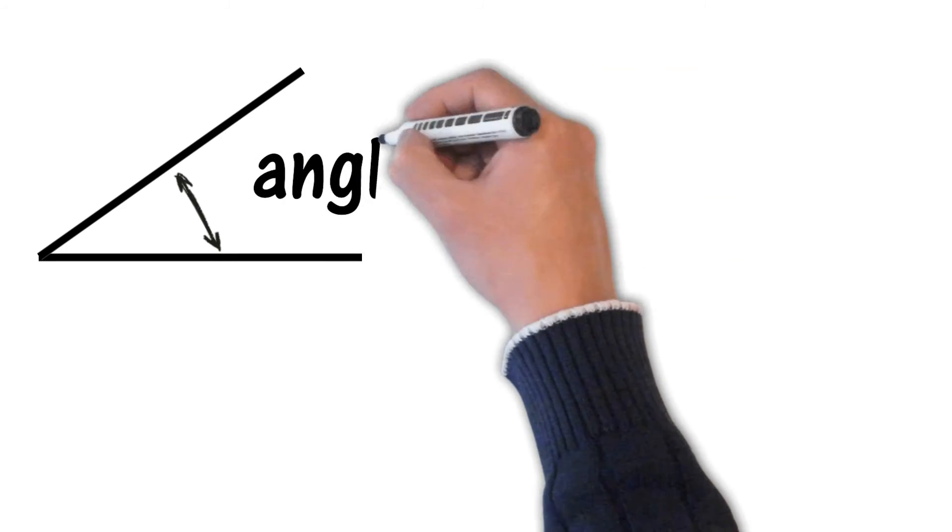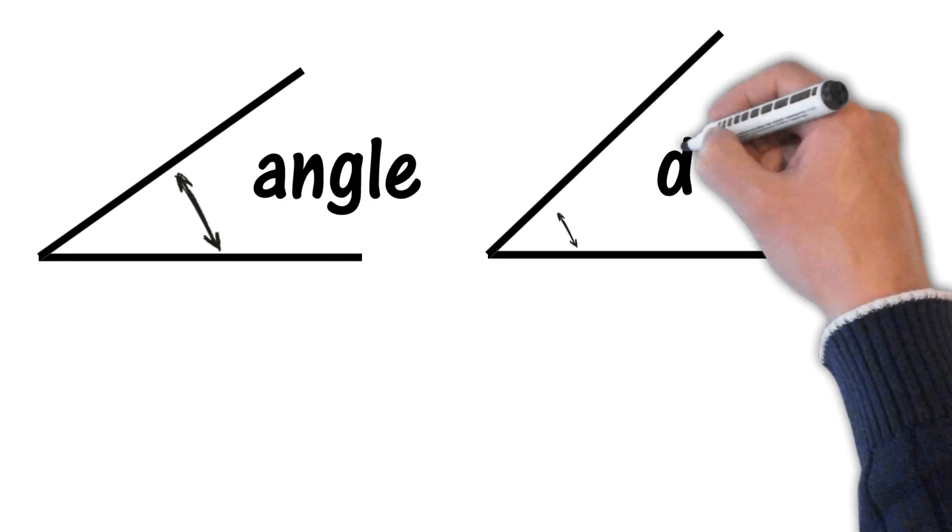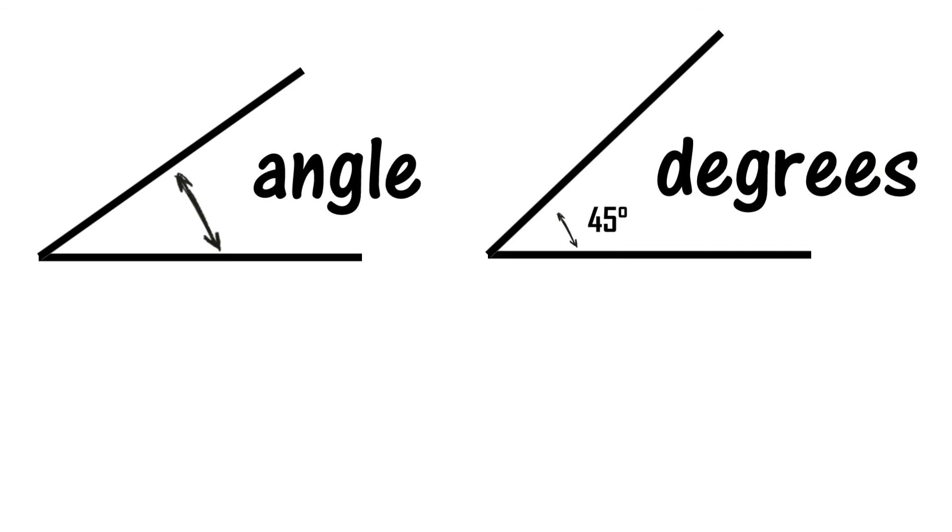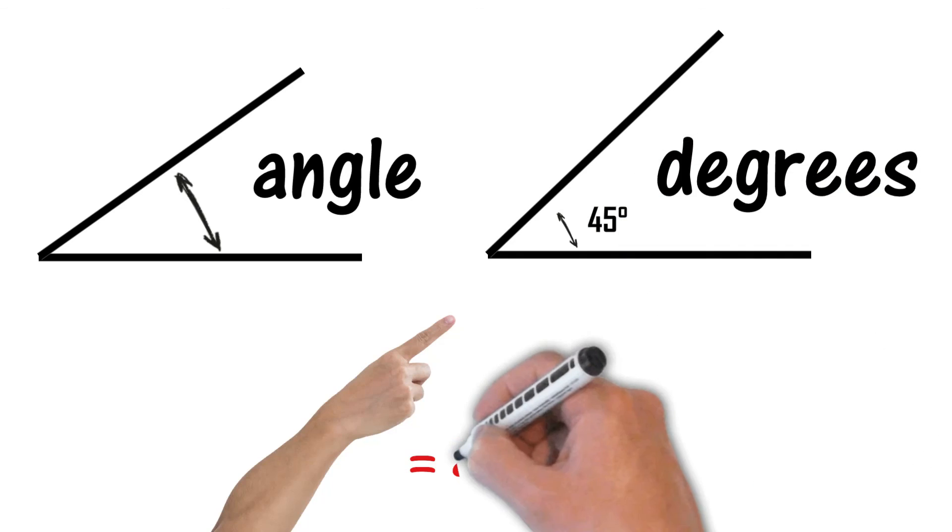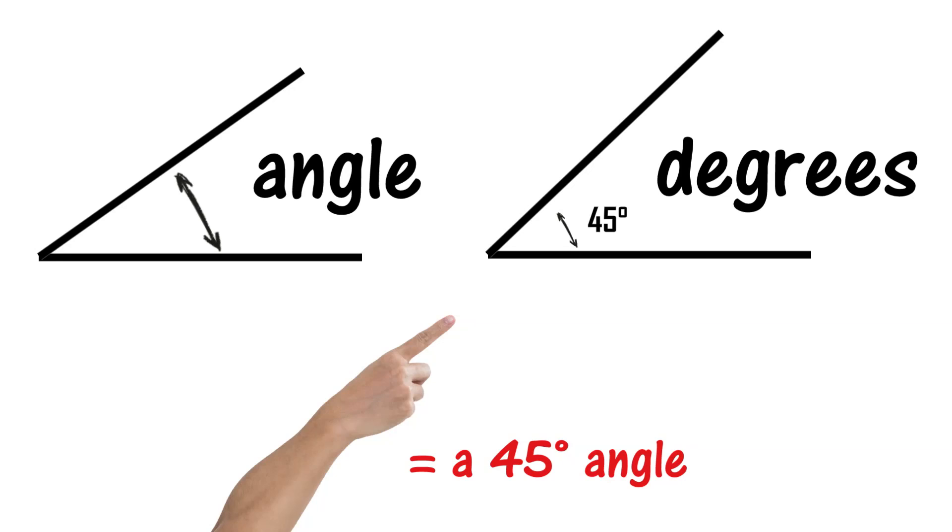So remember, angles are formed by two lines meeting at a point, and degrees measure how open or closed the angle is. A right angle measures 90 degrees.